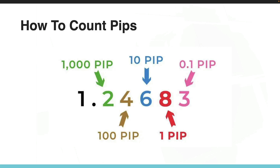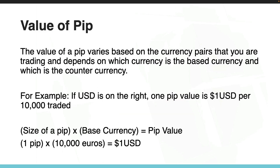In this example, we have 8 sitting at the fourth decimal place — that is the one pip position, and we refer to this as 8 pips. At the third decimal place we have 6, and that goes up by ten, so in this case we say 60 pips.